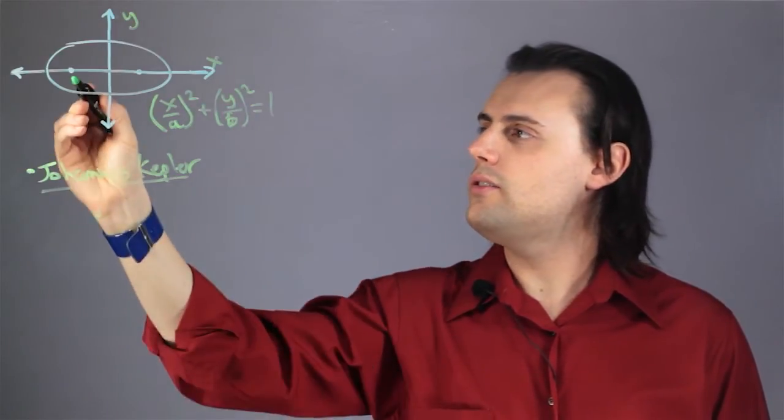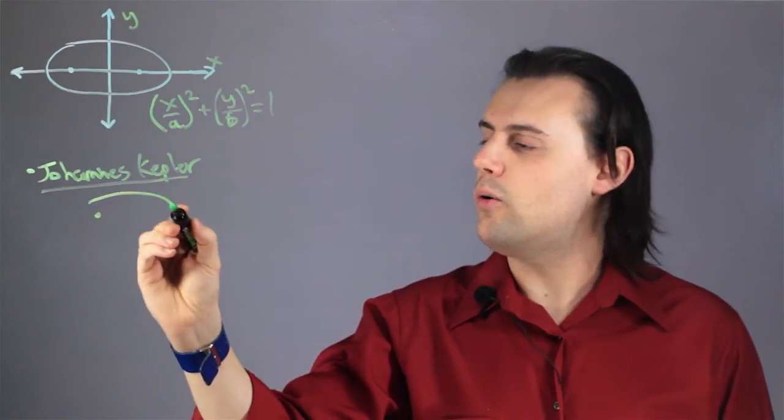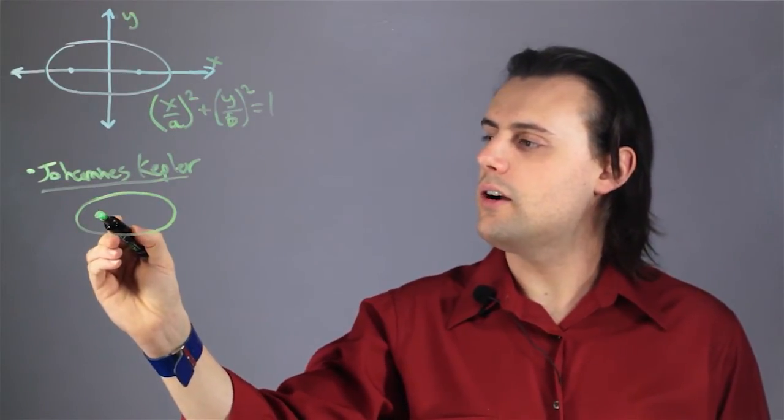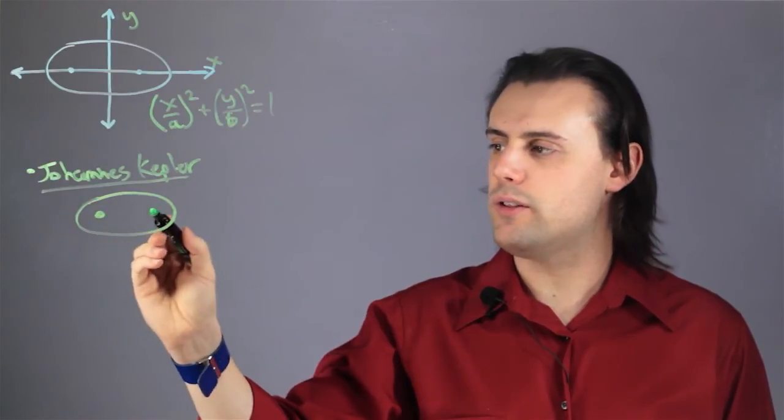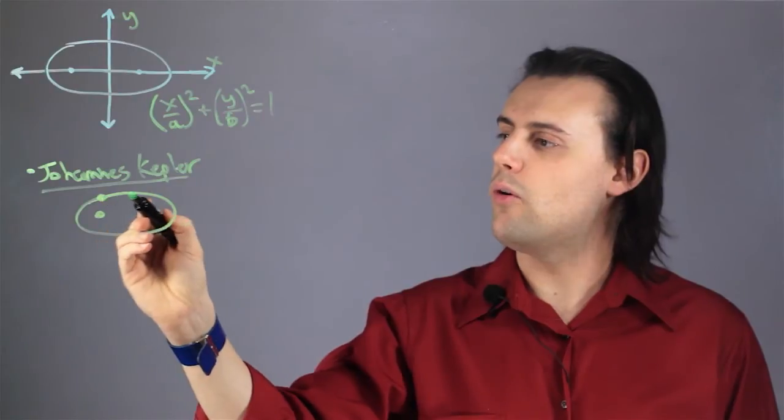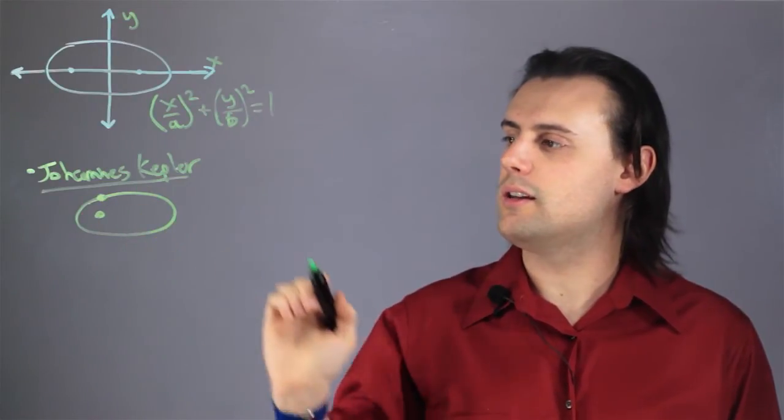These two points are called the focal points. And in a planetary orbit that's stable, this is a star and it exists at one of the two focal points. And then the planet, the orbiting satellite, will orbit around the star in an elliptical fashion.